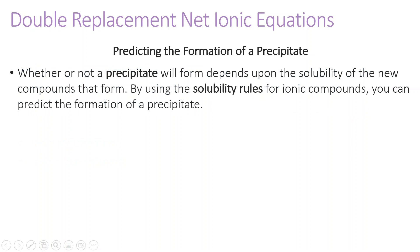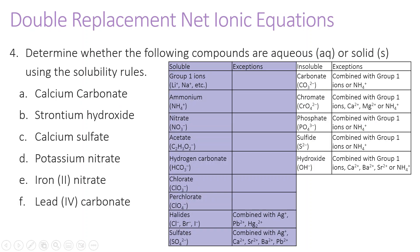Whether or not a precipitate will form depends on the solubility of the new compound. By using the solubility rules for ionic compounds, we can predict whether or not a given compound will be solid or aqueous — if it will form a precipitate or not. Compounds that are soluble are going to be aqueous in solution, whereas compounds that are insoluble will be solid in solution.